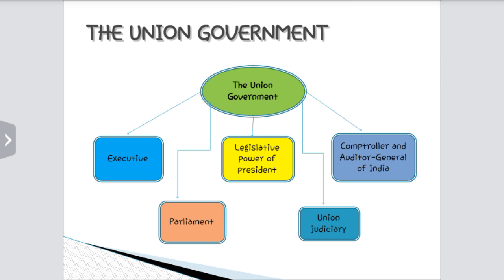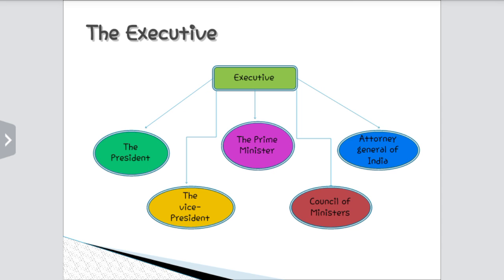The Union Government consists of the Executive, Parliament, Legislative Power of the President, Union Judiciary, and Comptroller and Auditor General of India. The Executive consists of the President, Vice President, Prime Minister, Council of Ministers, and Attorney General of India.